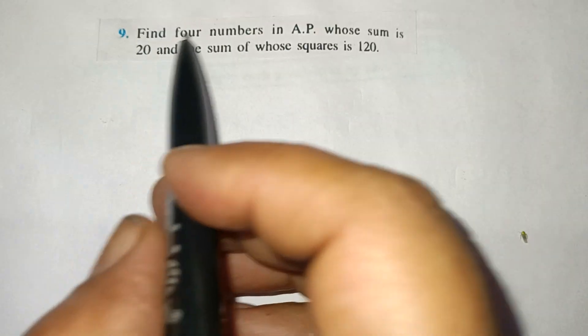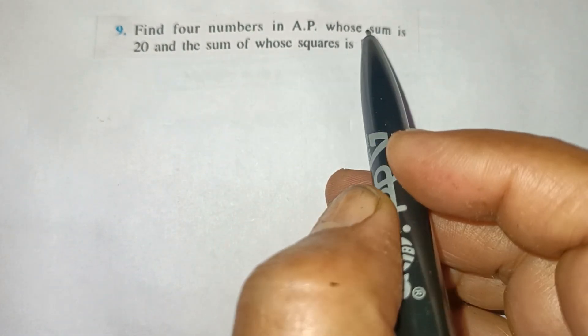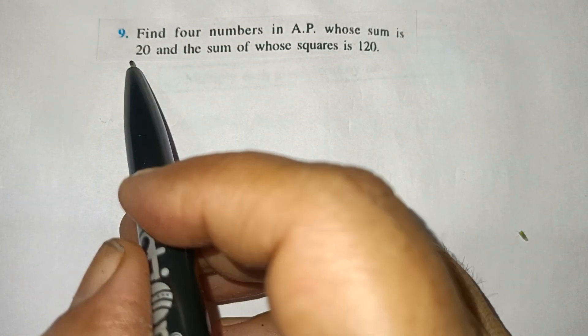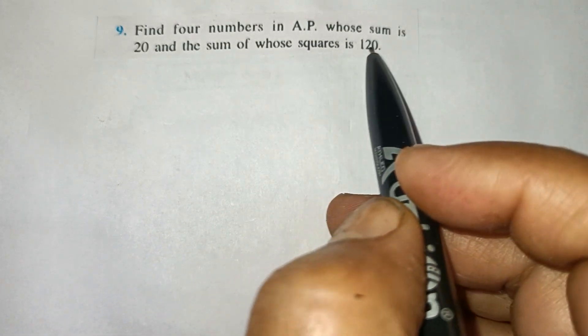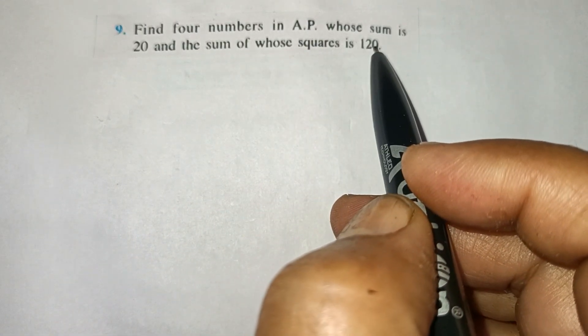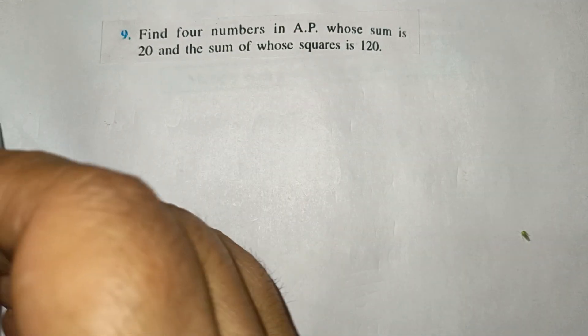Q9. Find 4 numbers in AP whose sum is 20 and the sum of whose squares is 120. Solution.